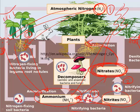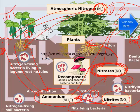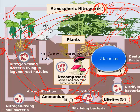The last process to discuss is denitrification, which returns nitrogen to the atmosphere. This happens two ways: volcanic eruptions produce ammonia, nitrogen monoxide, and nitrogen dioxide, releasing nitrogen directly. The other method is through denitrifying bacteria, which convert NO3 directly back to N2 — providing a direct route from nitrates in the soil back into atmospheric nitrogen.